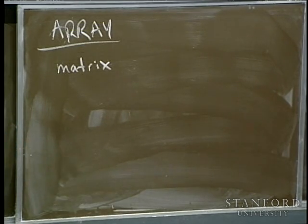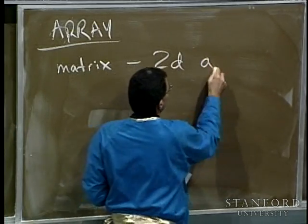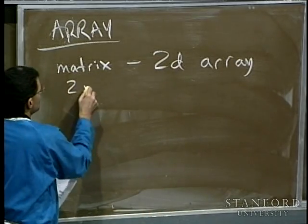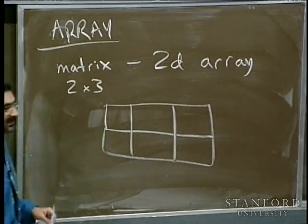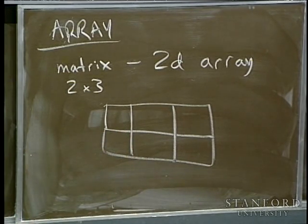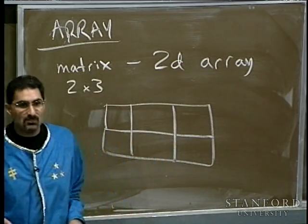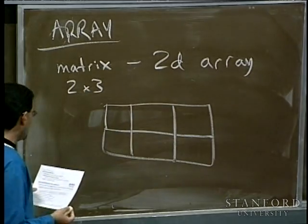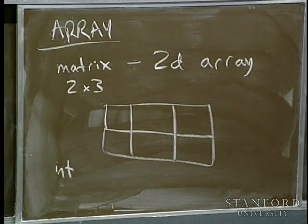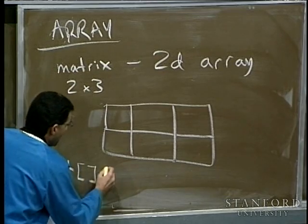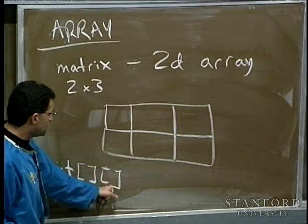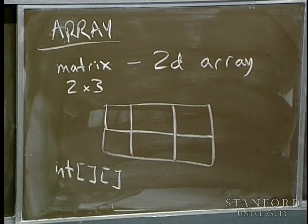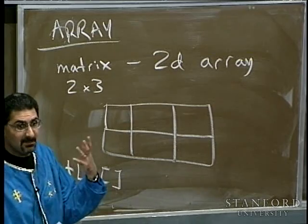A matrix is mostly a grid of numbers in a mathematical sense, but we think of it as a two-dimensional array. If I have a two-by-three matrix, that means it's a grid with two rows and three columns. You might look at that and say it looks like two arrays stacked on top of each other. And in fact, you'd be correct — multi-dimensional arrays are really arrays of arrays.